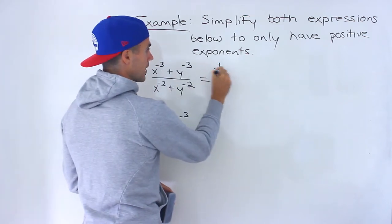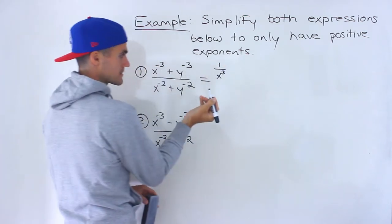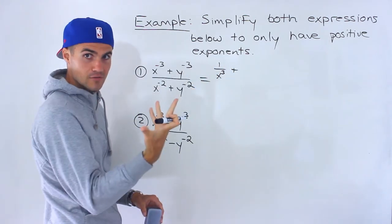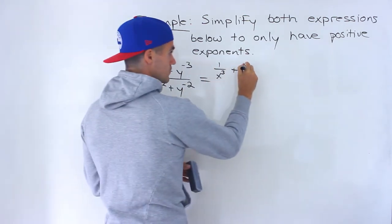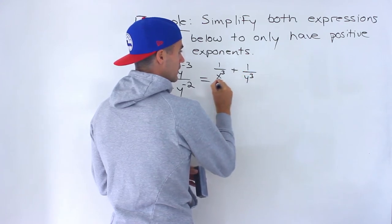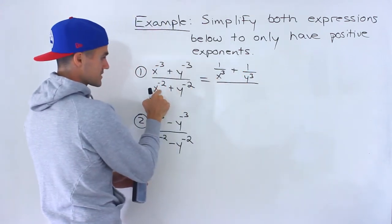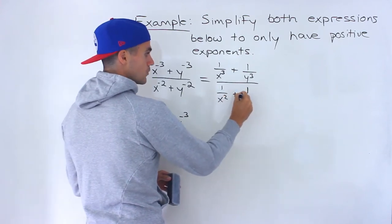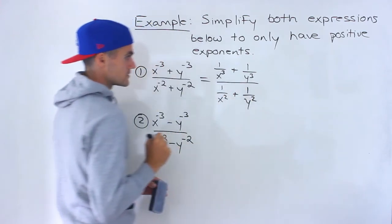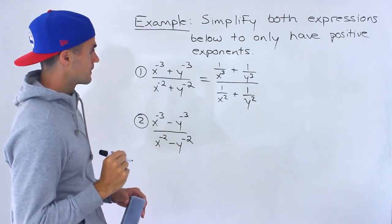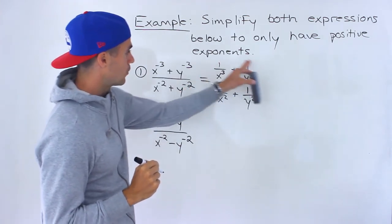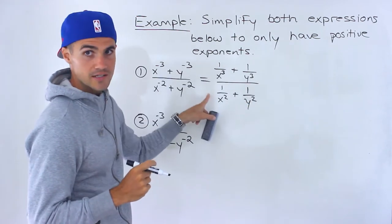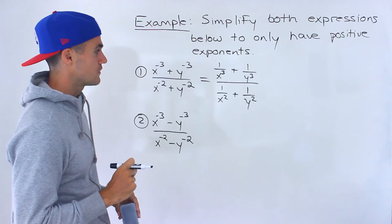So x to the negative three we can rewrite as one over x to the three, plus y to the negative three rewritten as one over y to the three, and that's all over x to the negative two which would be one over x squared, and y to the negative two which would be one over y squared. In my opinion it's better to work with this form, and it's pretty much a necessary step in order to simplify.